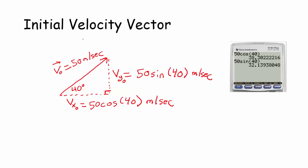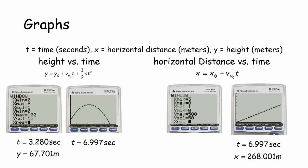In doing these word problems, we're going to need our knowledge of vectors — taking vectors, looking at their component form, adding them together to find resultant vectors. The computation is on the calculator. Just make sure the angle is in degrees, so confirm your calculator mode is in degrees when computing the initial velocity. I've defined my variables: t equals time, x equals horizontal distance in meters, and y equals height in meters.